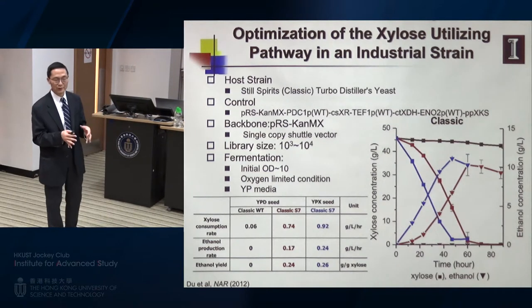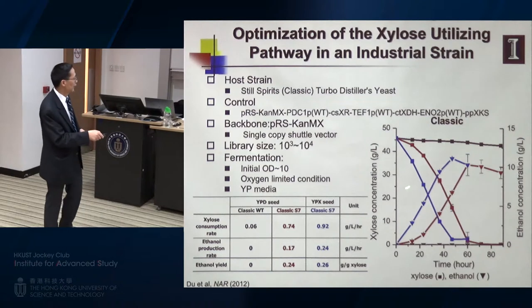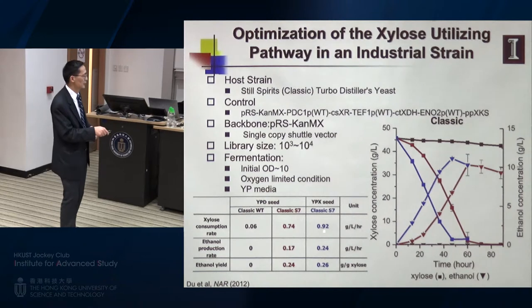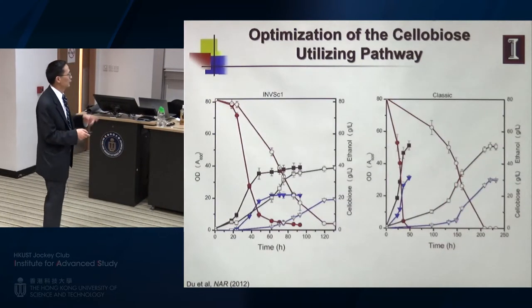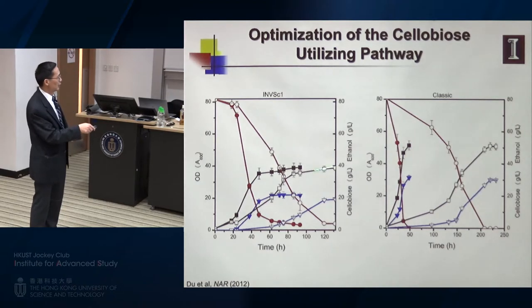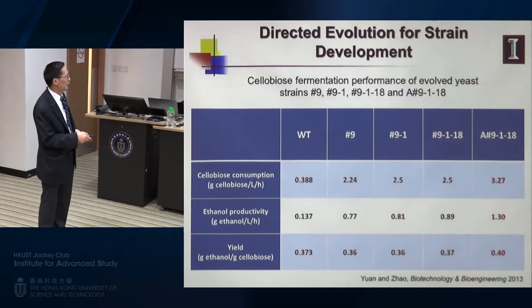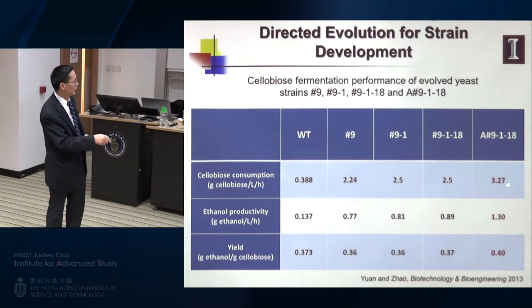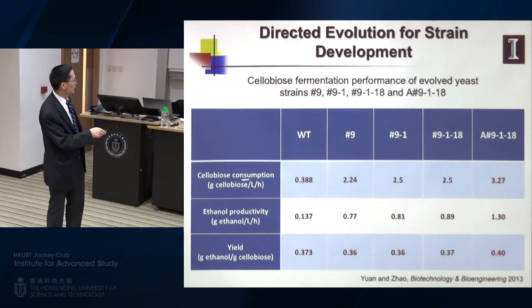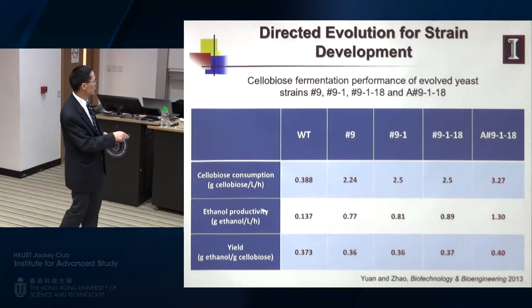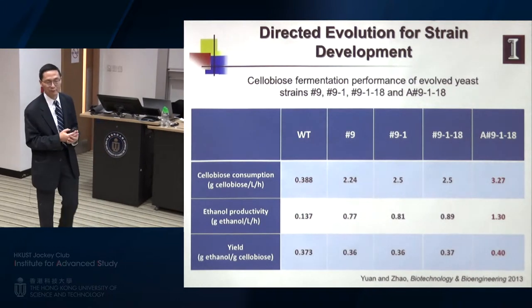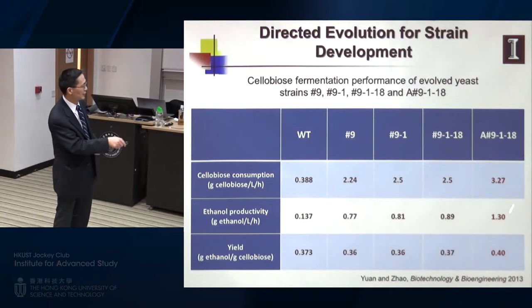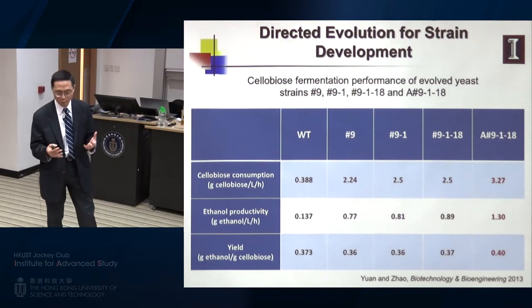We also transformed the same library into an industrial strain with a different genetic background and found even more significant improvement than in the laboratory strain. For the second enzyme pathway, we achieved similar improvements. Summarizing: through a few rounds of directed evolution, we increased the xylose consumption rate by tenfold and ethanol production by almost tenfold. These are still proof of concept studies, since the numbers are not high enough for practical applications.